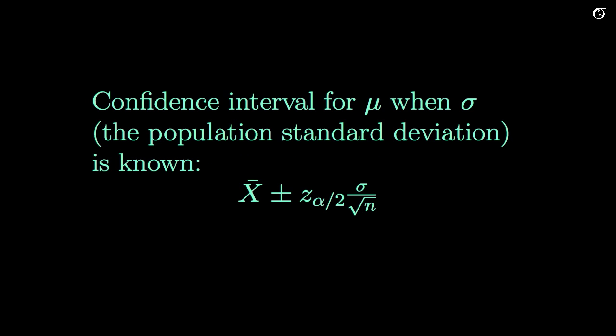We previously learned that when constructing confidence intervals for this population mean mu when sigma is known, we had this formula where we had our point estimator, and then plus and minus this margin of error. We had the notation where sigma x bar equals sigma over the root of n.